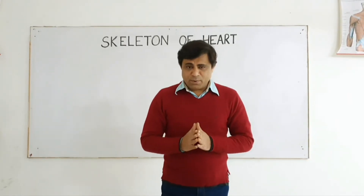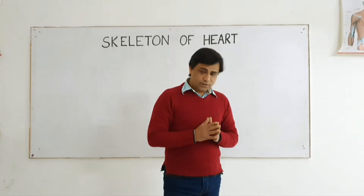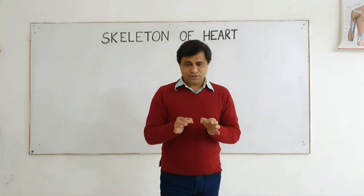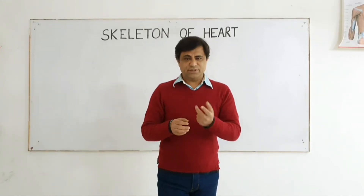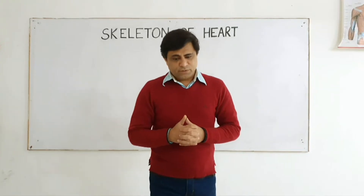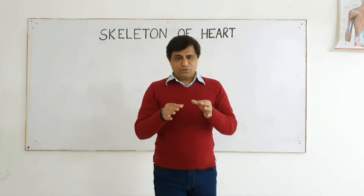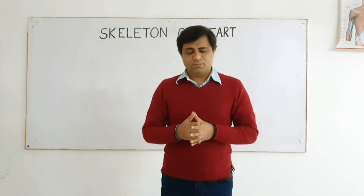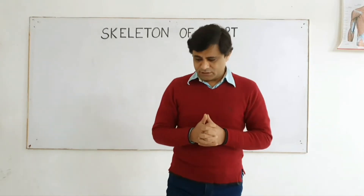Another purpose of this fibrous skeleton is to support the walls — the two AV valves, the tricuspid and mitral valves, and the two valves of the arteries like the pulmonary trunk and ascending aorta. These valves also need to be patent; they should not collapse. For that purpose, there is a skeleton of the heart.